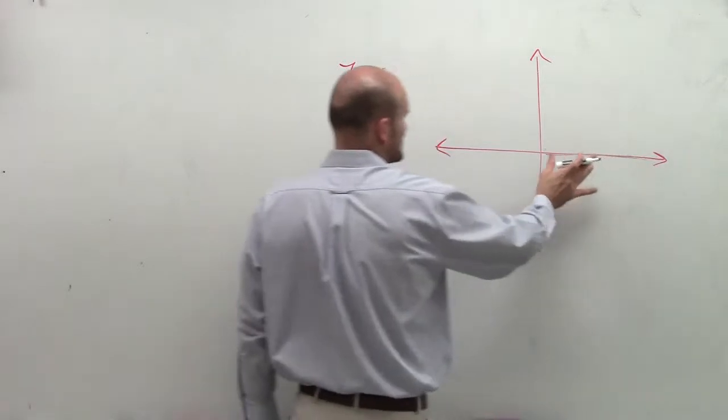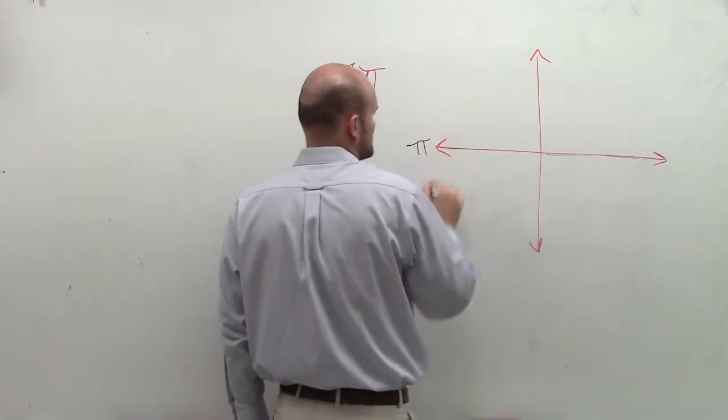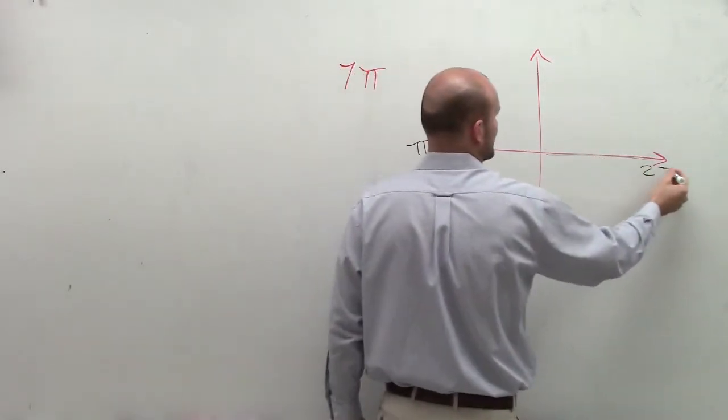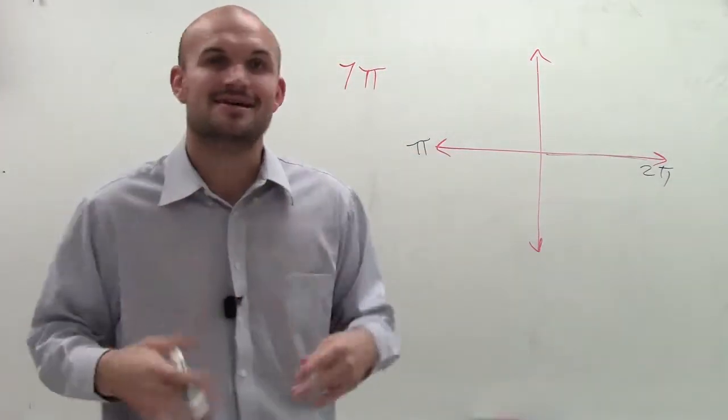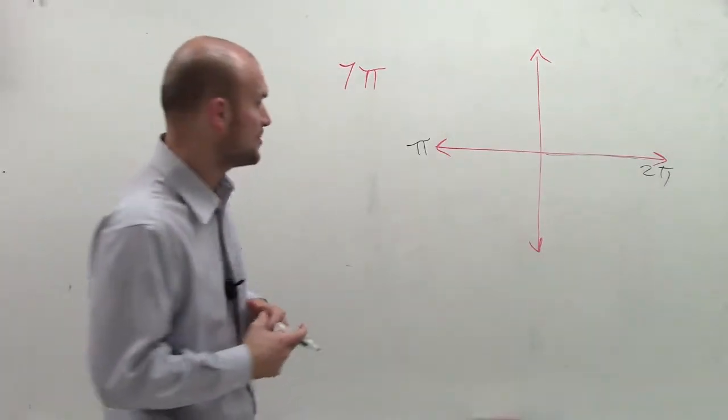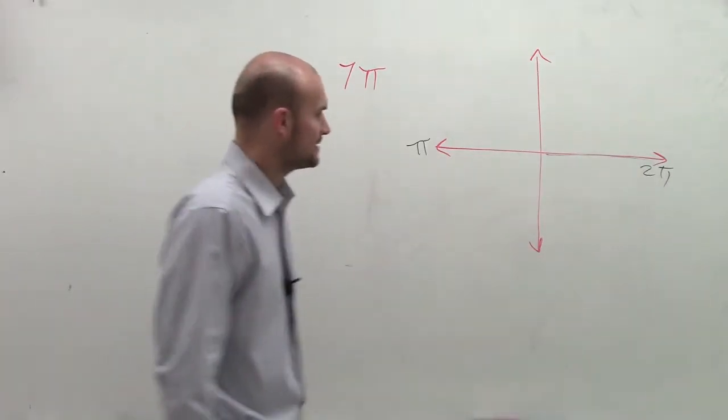So remember, if I have my initial side here, halfway around the circle is always pi. All the way around the circle is 2 pi. You've got to know it, OK? So get to know it and remember it. Because when doing trig, that's a very important part. Now, graphing them, let's just look at it.